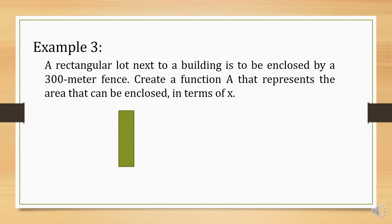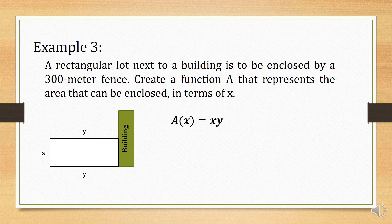We have a building, and adjacent to it is the rectangular lot. The rectangular lot requires fencing on three sides — the side adjacent to the building does not need to be fenced. Since we are looking for a function that represents the area, we have A of x, meaning the area is a function with respect to x. Using x and y, we have A of x is equal to x times y.